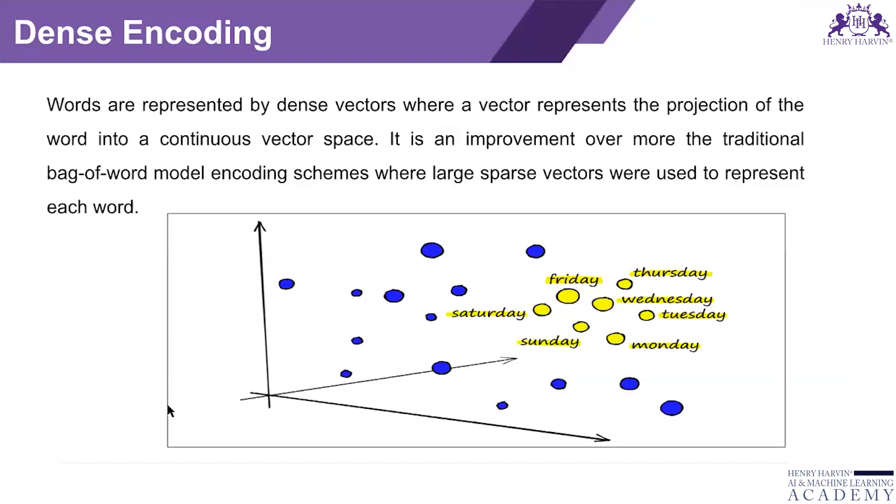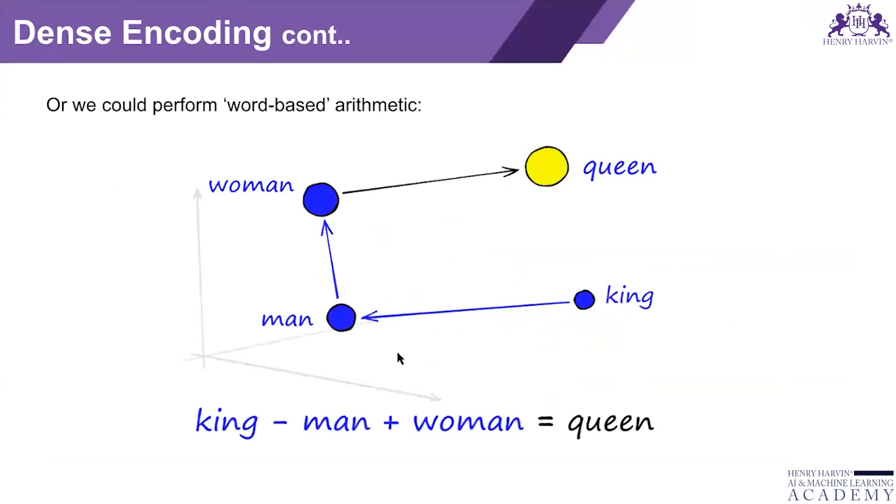Dense encoding is capable of more features. Encoding schemes where large sparse vectors are used to represent each word.